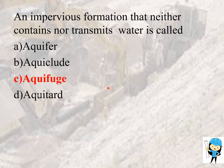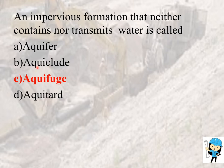This question was asked in TNPSC-AE 2019: 'An impermeable formation that neither contains nor transmits water is called?' The answer is Aquifuge. We already know Aquifer is a permeable formation, Aquiclude contains water but allows it to pass through, Aquifuge is the answer, and Aquitard only allows seepage flow of water.